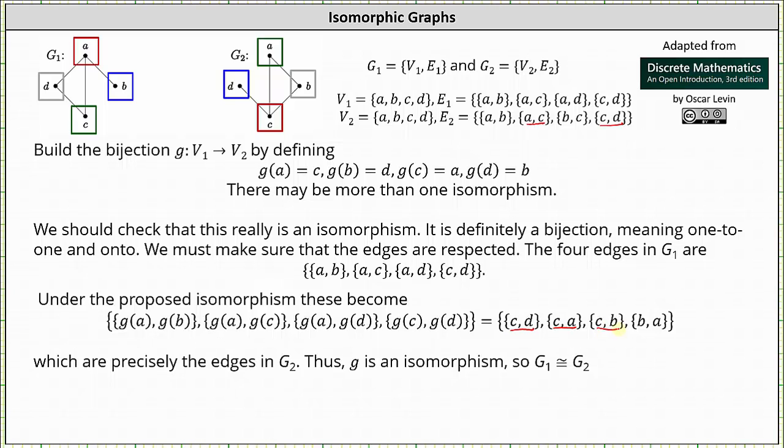Both contain the edge CD or the edge BC, and both contain the edge BA or the edge AB. The edges under the proposed isomorphism are precisely the edges of G2. Thus, G is an isomorphism, and we say that G1 is isomorphic to G2. I hope you found this helpful.